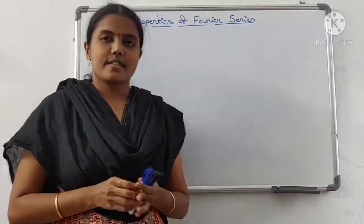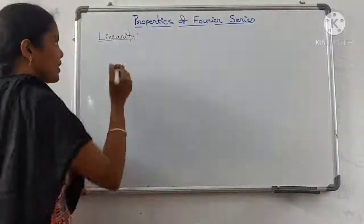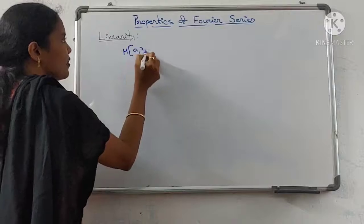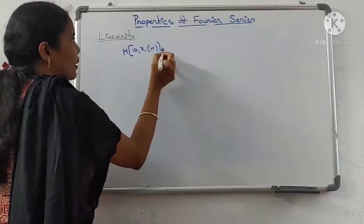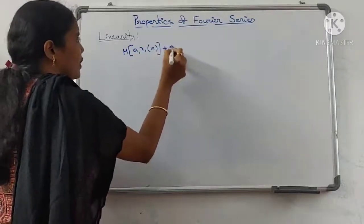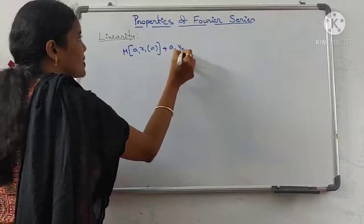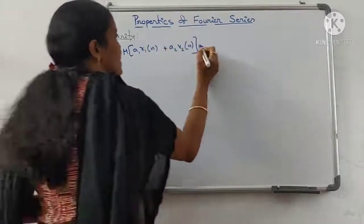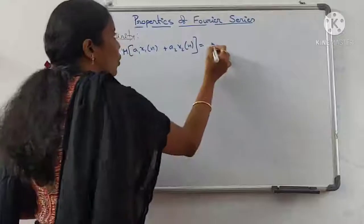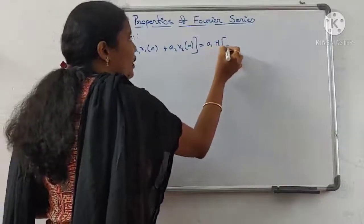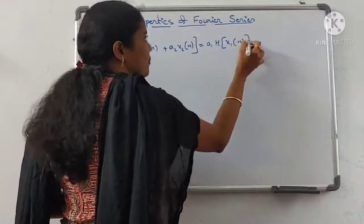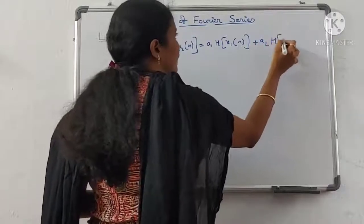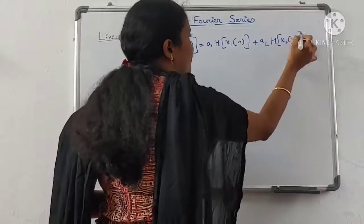It states that the weighted sum of two input signals, a1 x1(n) plus a2 x2(n), is equal to the weighted sum of individual inputs a1 h of x1(n) plus a2 h of x2(n).